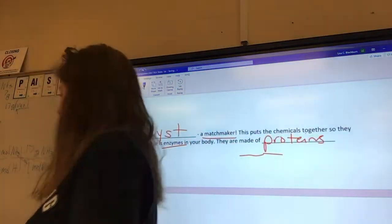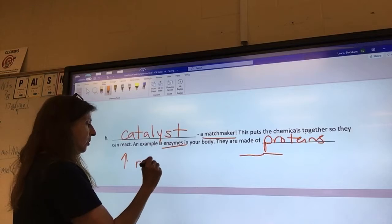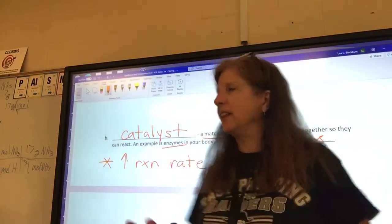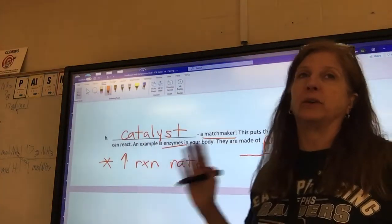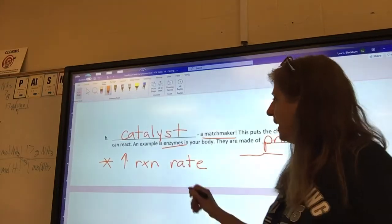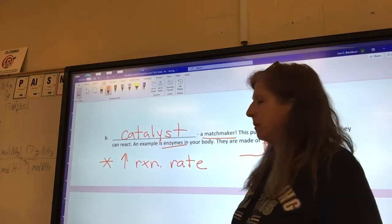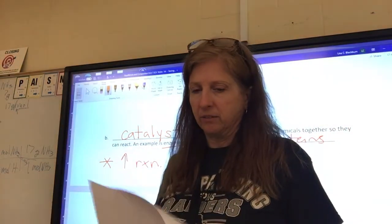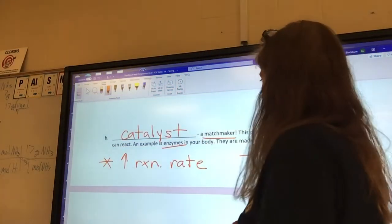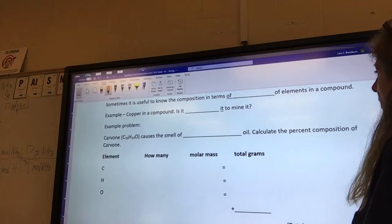Next idea. And this, I think somebody already said, is sometimes you need a chemical to get them together. What's that called? A catalyst. Y'all are learning. A catalyst is like a matchmaker. This puts the chemicals together so they can react. An example in your body is enzymes. And do you remember from biology class what enzymes are made out of? Proteins. Any questions about page one? So adding a catalyst increases the reaction rate. These chemicals would probably eventually react anyway. But by adding a catalyst, the reaction goes much faster.